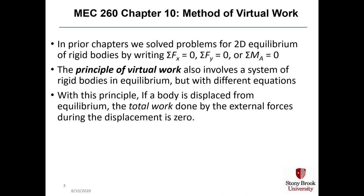In prior chapters we solved problems for 2D equilibrium of rigid bodies by writing summation f_x = 0, summation f_y = 0, and summation of moments around point A = 0, where point A was a central location of the rigid body for which we were trying to find reactions. The principle of virtual work also involves a system of rigid bodies in equilibrium but with a different set of equations. With this principle, if a body is displaced from equilibrium, the total work done by the external forces during the displacement is zero.